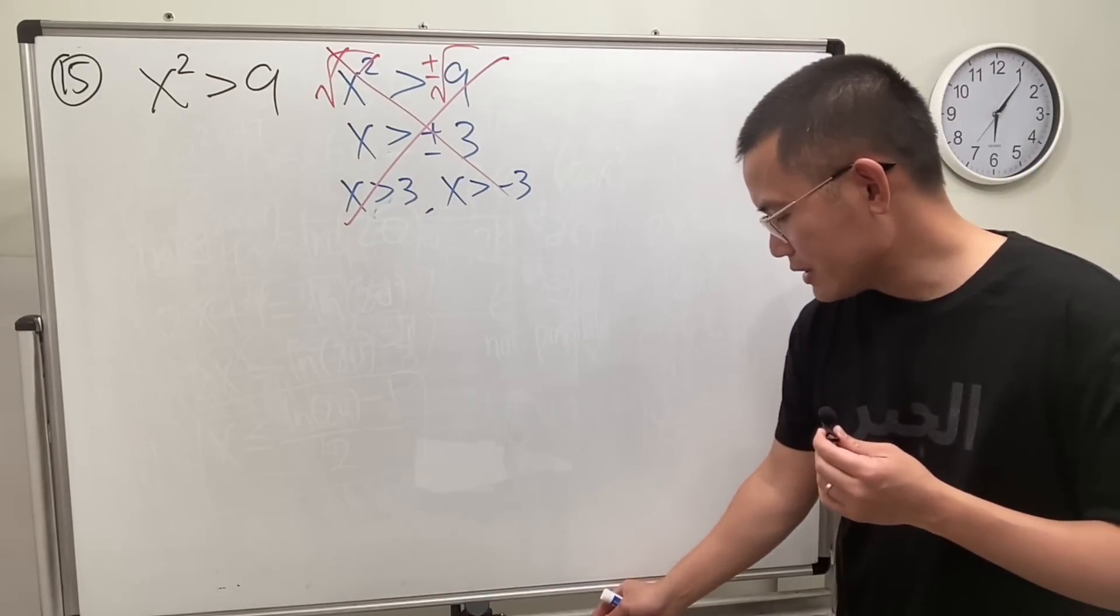Now I'm going to do a number line test. So draw a number line, make a mark—negative three is smaller so put it here—and then make a mark here. Three is bigger so put it here. Go back to the original inequality, it's just a greater than, right? So that means we are not including this, we are also not including that. Now we are going to take a point.